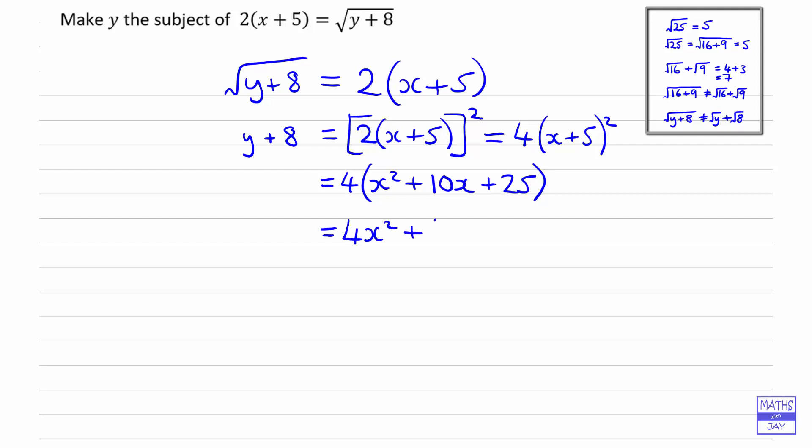And then we can take 8 away from both sides, so y is 4x squared plus 40x plus 92.